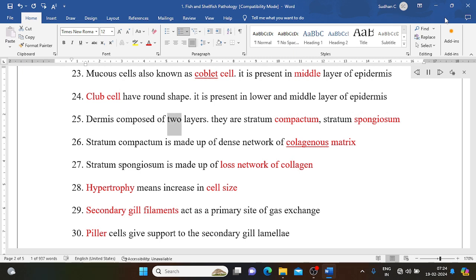Dermis composed of two layers. They are stratum compactum and stratum spongiosum. Stratum compactum is made up of dense network of collagenous matrix. Stratum spongiosum is made up of loose network of collagen.